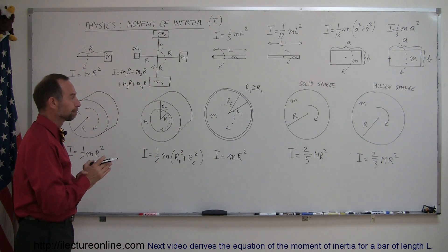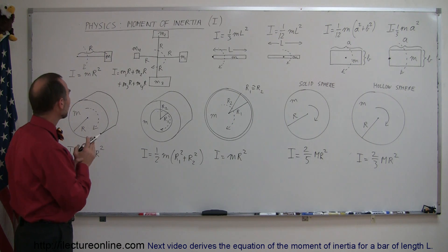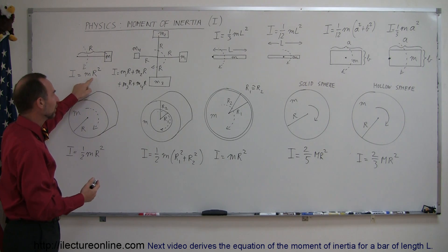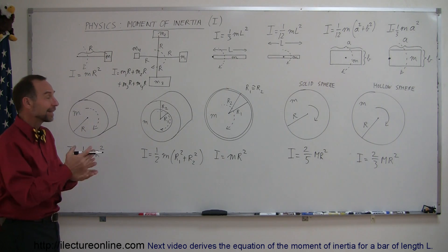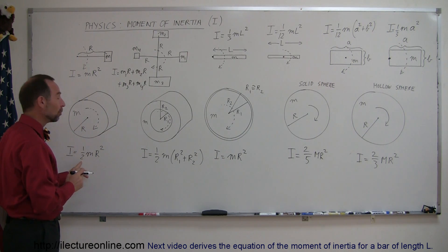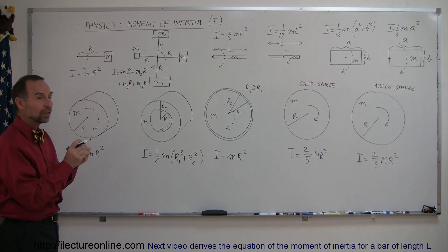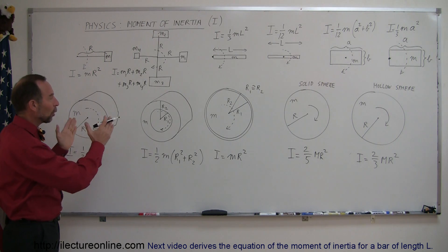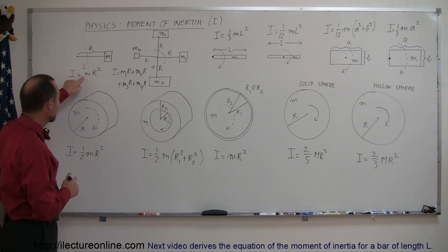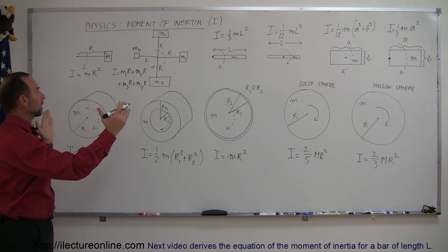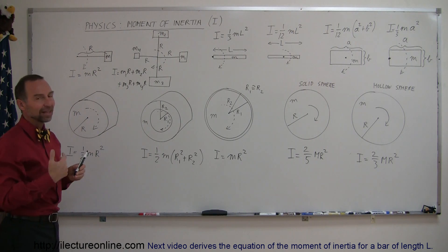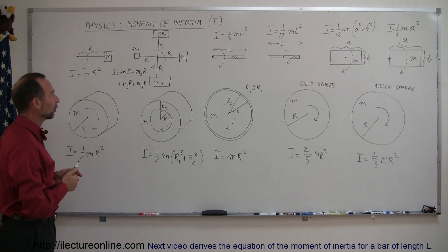Now let's see the pattern. The moment of inertia is either MR² or some fraction times MR². The more mass is distributed toward the center of rotation, the smaller the fraction and the smaller the moment of inertia. The more mass is distributed away from the center, the larger the fraction, approaching one. If all the mass is at distance R from the center, then I = MR².